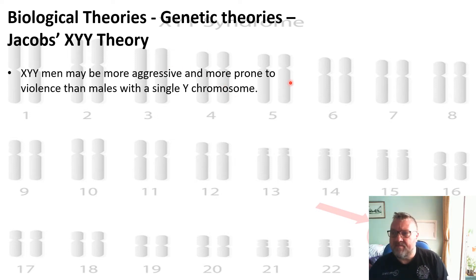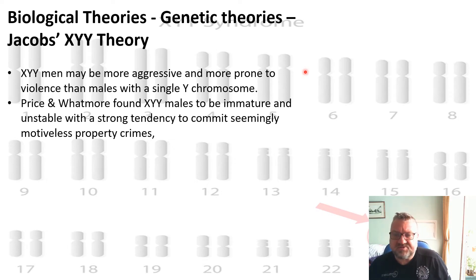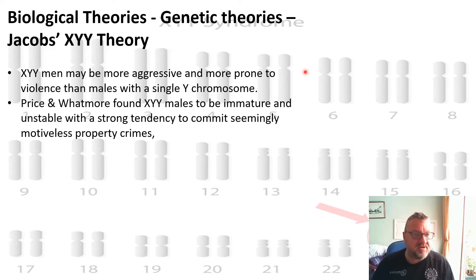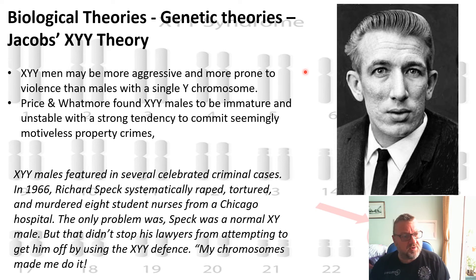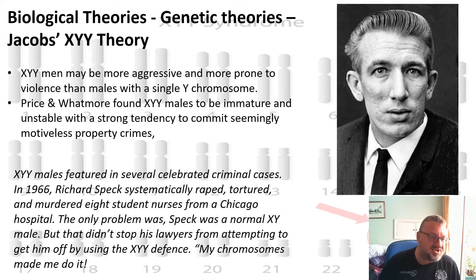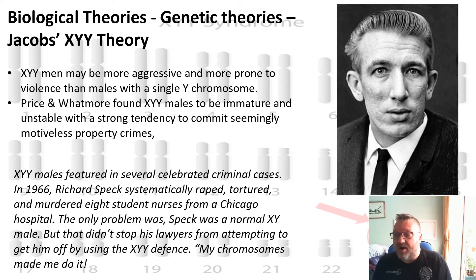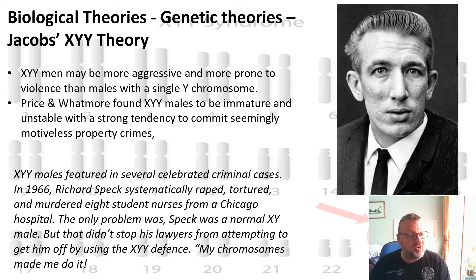XYY men may be more aggressive and more prone to violence than males with a single Y chromosome. Price and Watmore found that XYY males were immature and unstable and had a strong tendency to commit seemingly motiveless property crimes. However, XYY became a very common court defence in the 1960s. In the Richard Speck case — where Speck systematically raped, tortured, and murdered eight student nurses in a Chicago hospital — his defence used the fact that he was XYY, arguing 'my chromosomes made me do it.' The problem was that Speck wasn't XYY; he was a normal XY male, but that didn't stop lawyers from attempting to use the XYY defence.